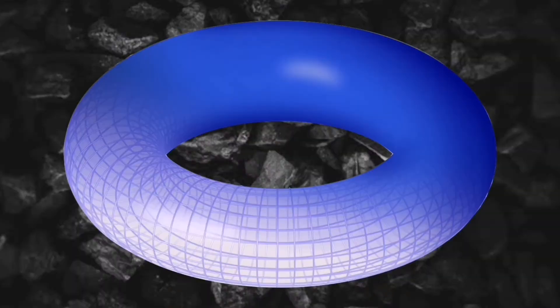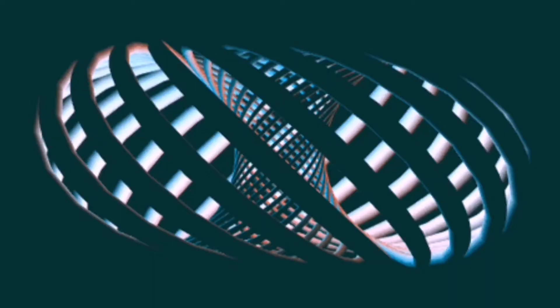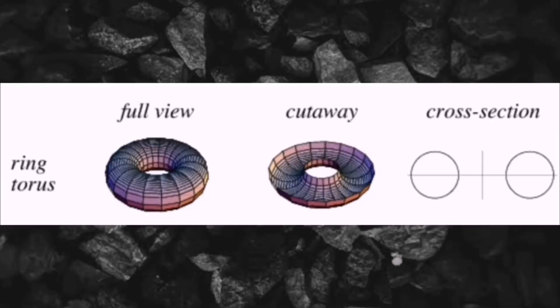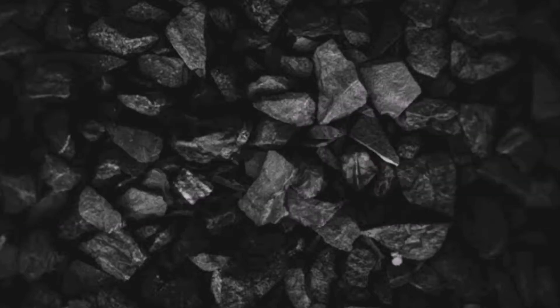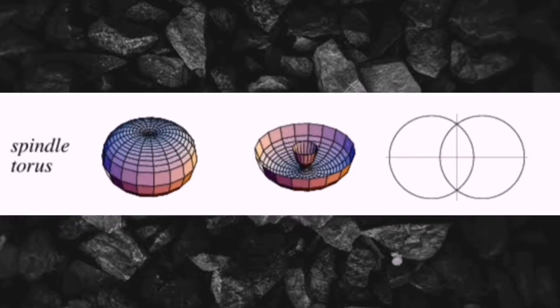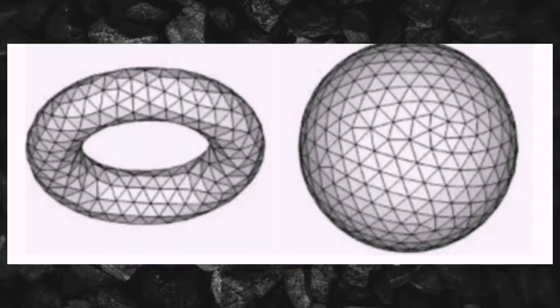An o-ring, also known as a packing or a toric joint. A toric joint — what exactly does that mean? It is a mechanical gasket in the shape of a torus. As the distance from the axis of revolution decreases, meaning the inner circle becomes smaller and the outer moves inwards, the ring torus becomes a horn torus, and then a horn torus transitions into a spindle torus.